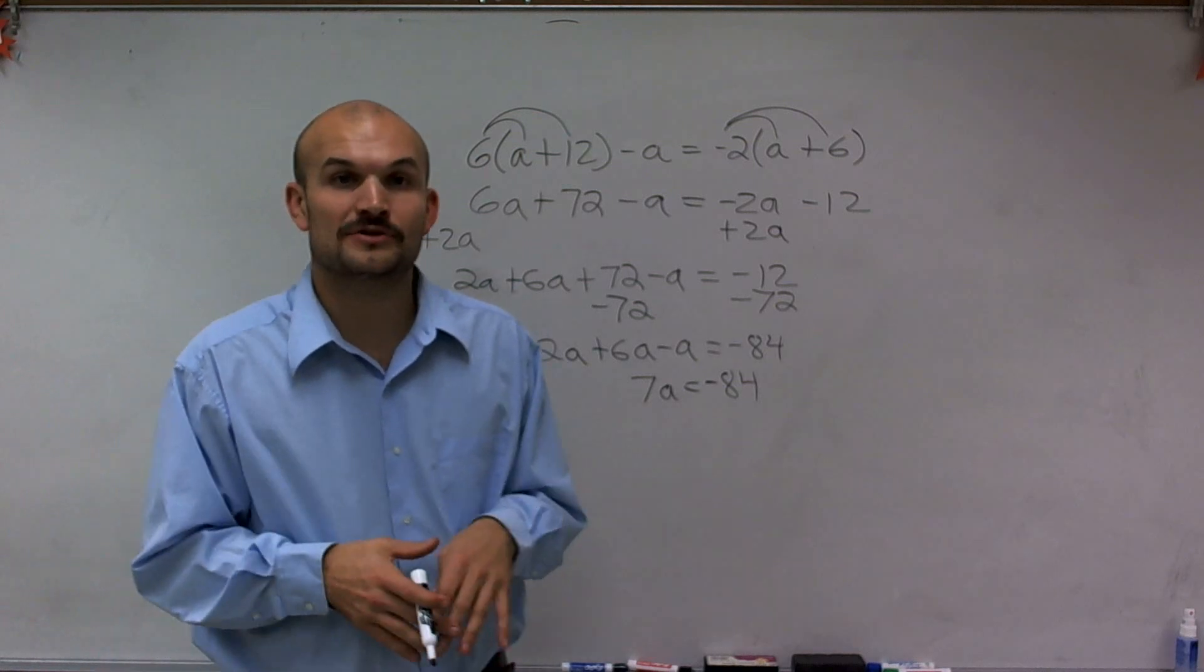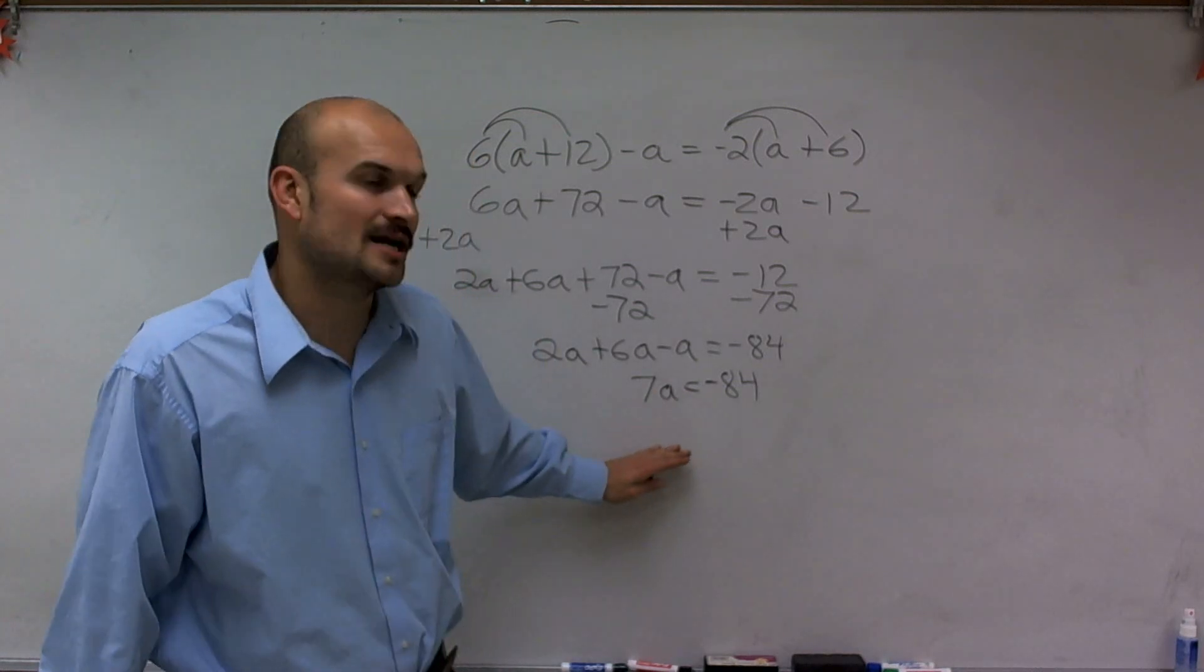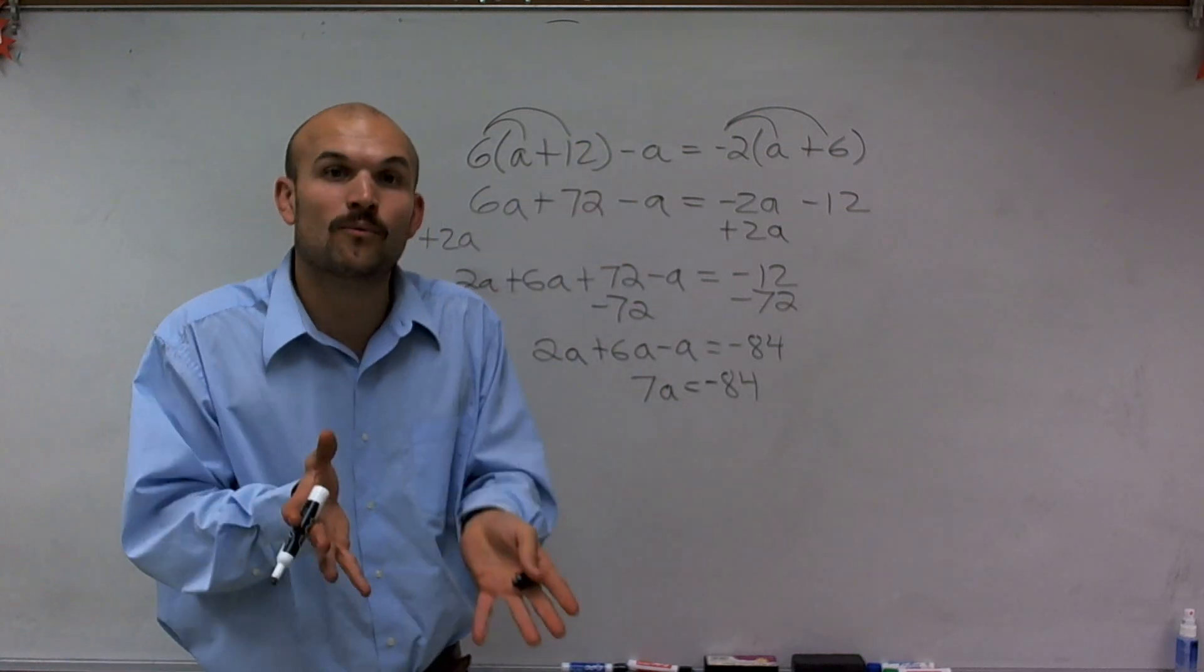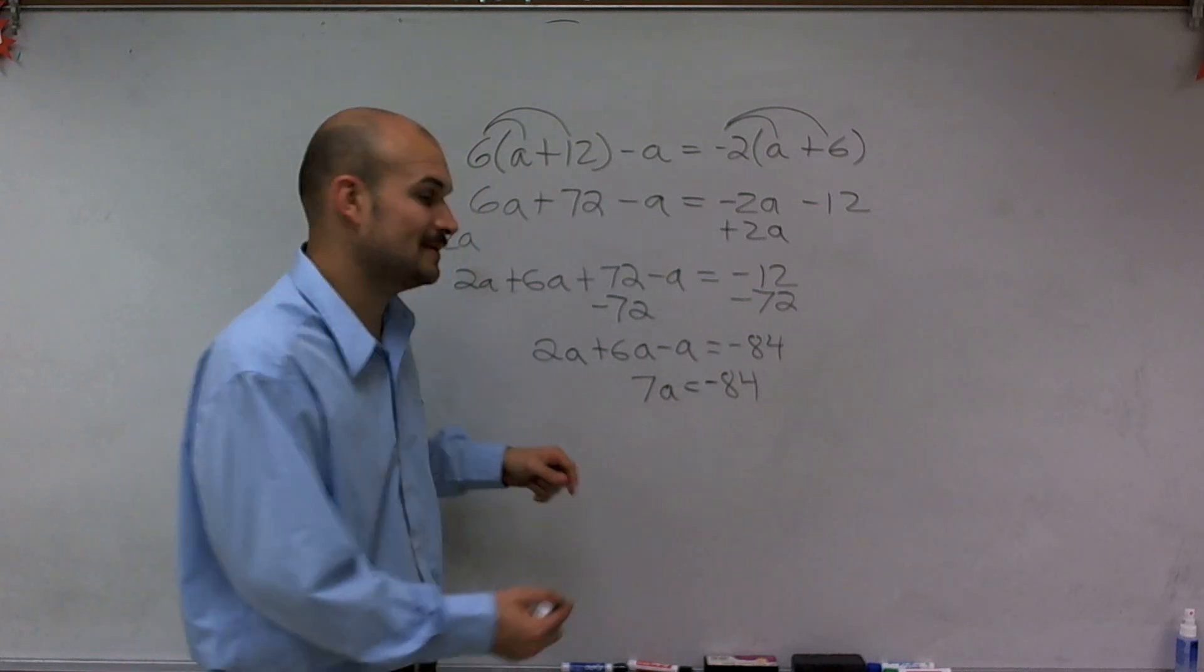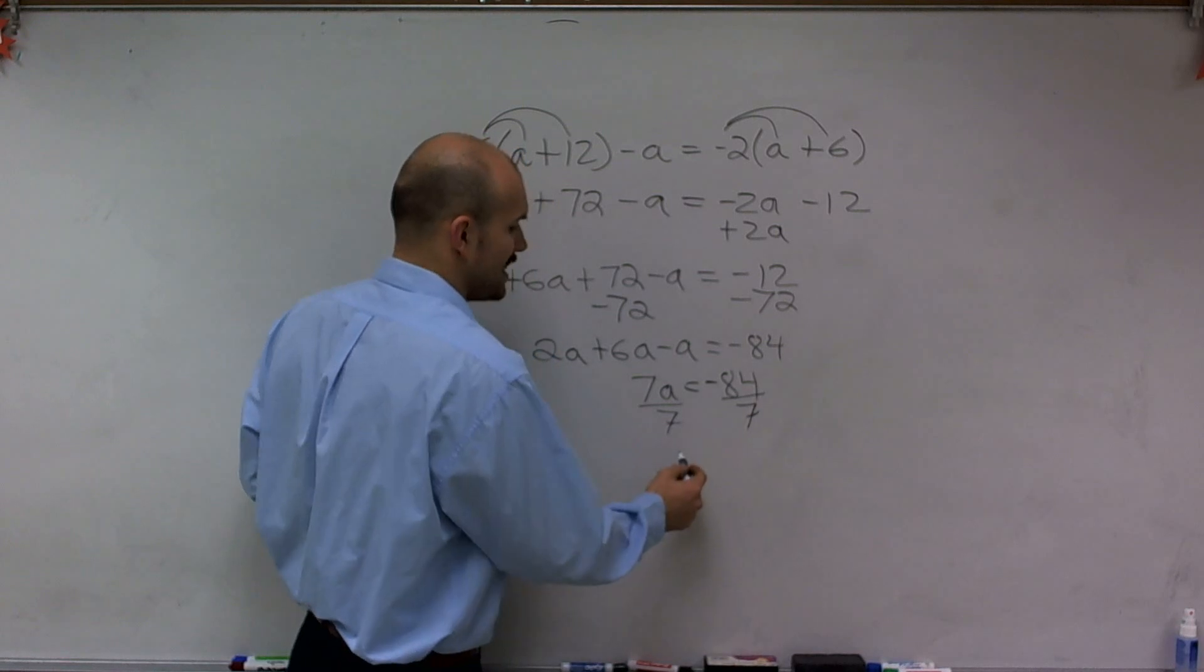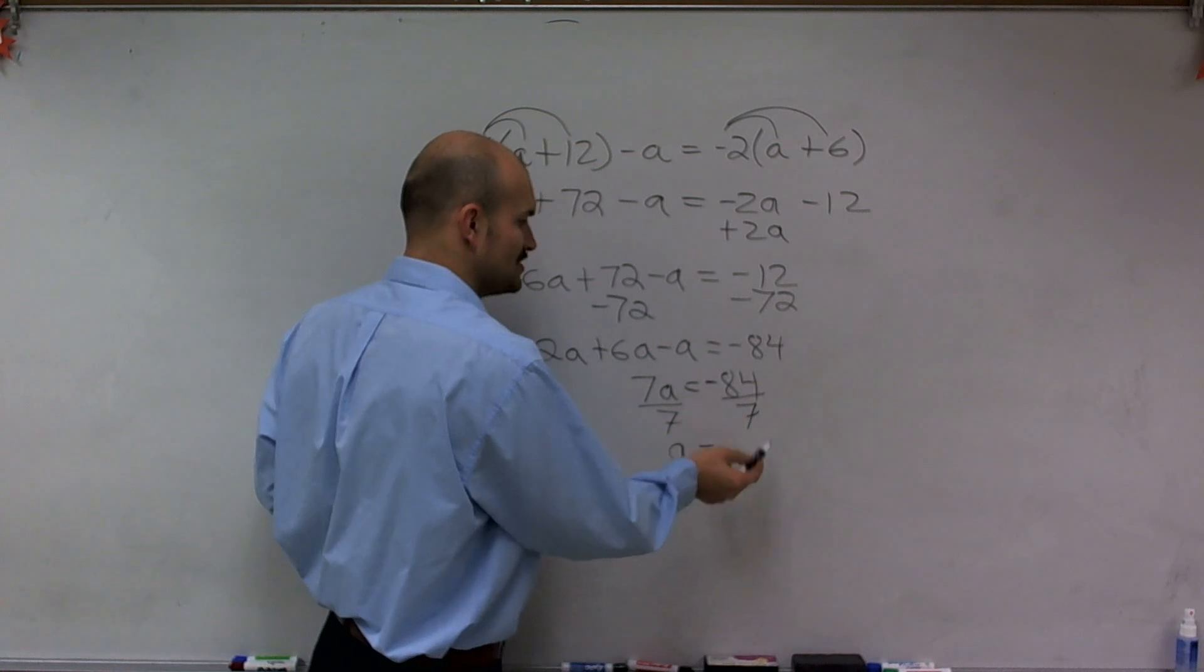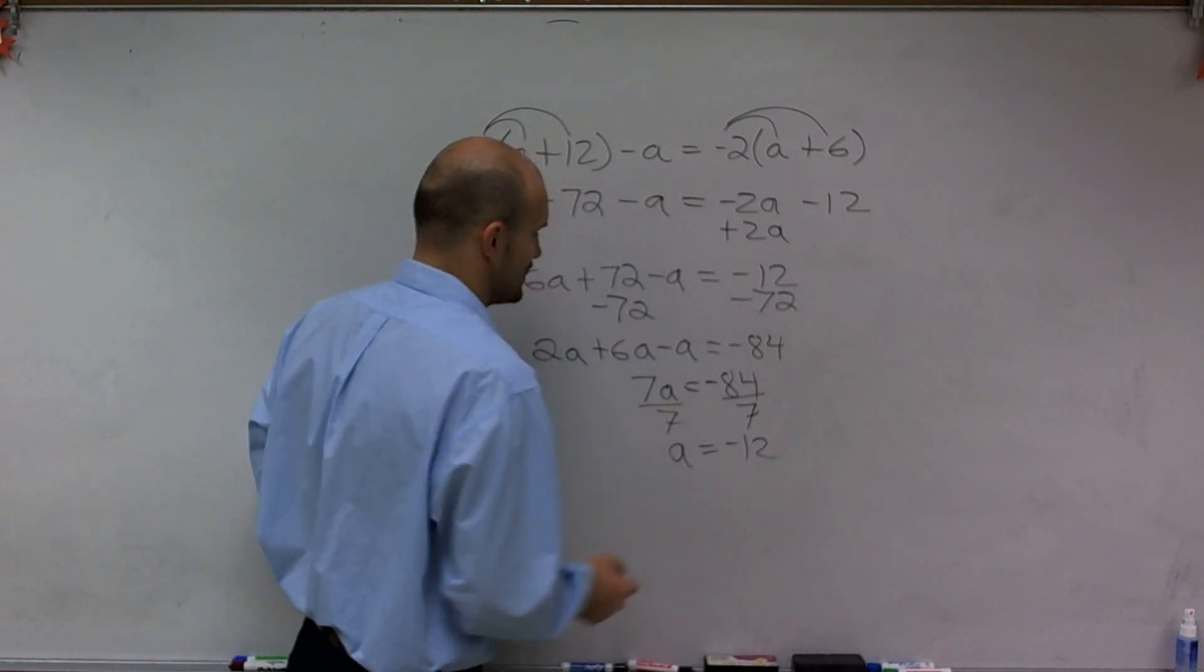So now the last thing I need to do is use my inverse operation one more time to get my a by itself. So you can see from here all the way down to here, I've finally got it down to 1a. Now I notice my a is being multiplied by 7. So to undo multiplication, I'm going to divide by 7 on both sides. And therefore, 7 divided by 7 is 1. 1 times a is a. So a is going to equal 7 goes into negative 84 a negative 12 times.